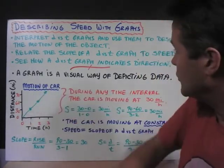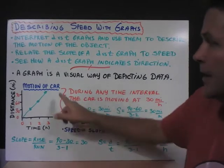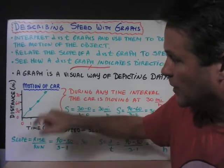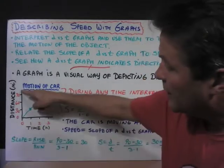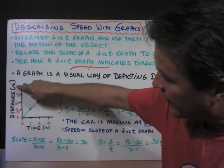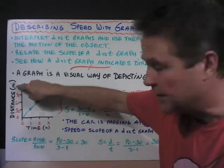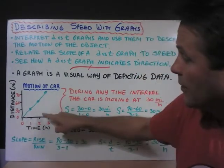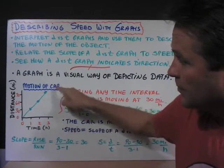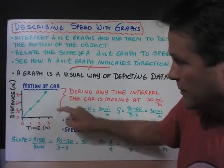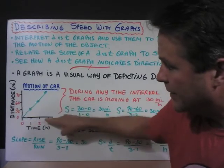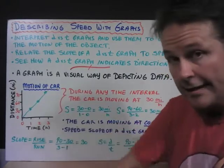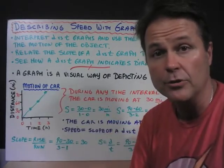So a graph is a visual way of depicting data. Here I have a graph depicting the motion of a car. We have what appears to be three data points. On the y-axis, we have distance and the units of distance. And on the x-axis, we have time and the units of time in hours. Now you'll notice that everything about the graph is clear to us. We have a title. We have numbers on the axes. We have the axes labeled. And we have the units on the axes. So all graphs should include all of those elements.